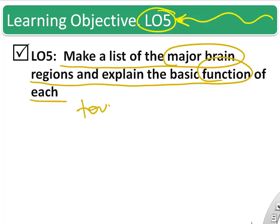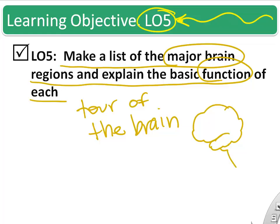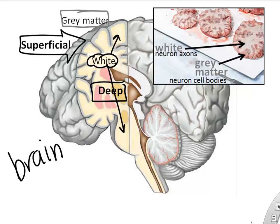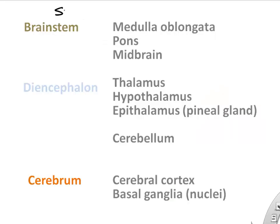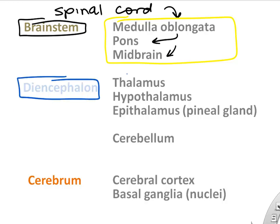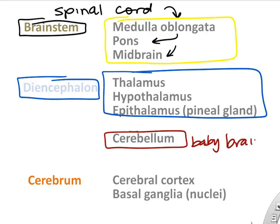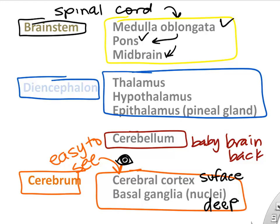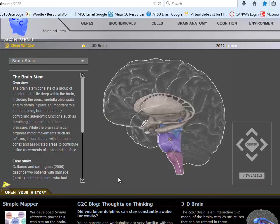The final learning objective is to take a tour of the brain and learn about the different brain areas and their functions. Looking at a brain, there are superficial and deep regions, gray matter and white matter. The brain has the spinal cord connecting to the medulla oblongata, then the brainstem — medulla, pons, and midbrain. Moving up, we have the thalamus and hypothalamus (the diencephalon), the cerebellum at the back, and then the large cerebrum which is most of what we picture when we think about the brain.